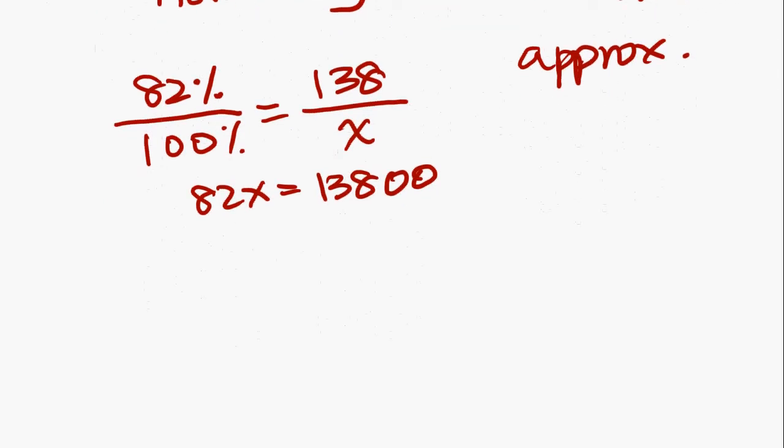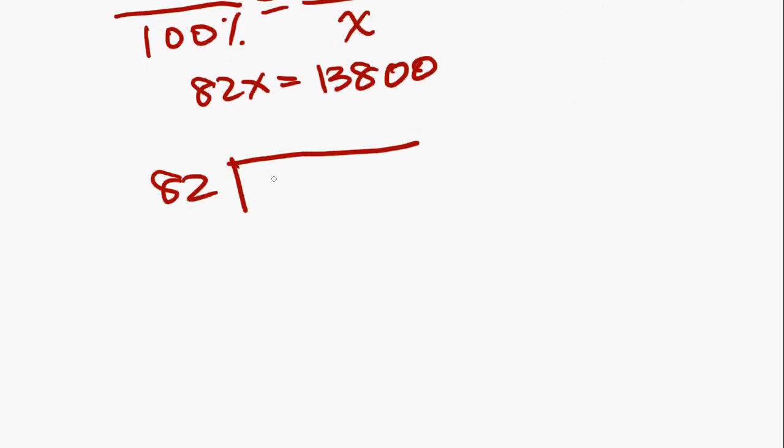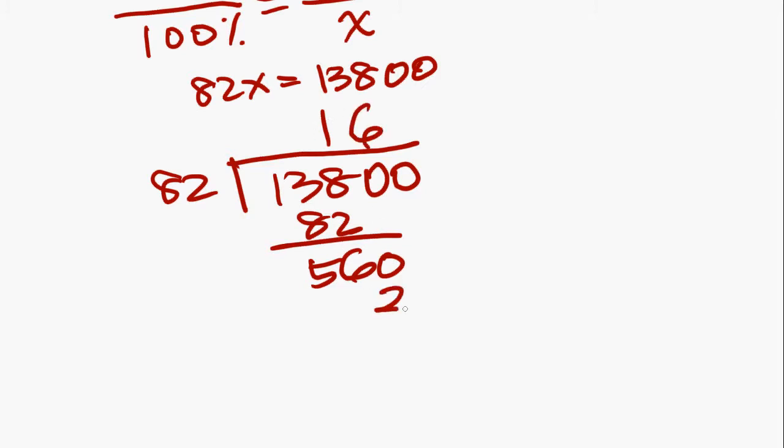In this case, let's actually do the calculation. We have 82 dividing into 13,800. And what you end up getting is 182, 56. Bring down to zero. I think that goes into it six times. Zero. And then 680, I think the closest is, yeah, eight. So approximately 168 is the total.